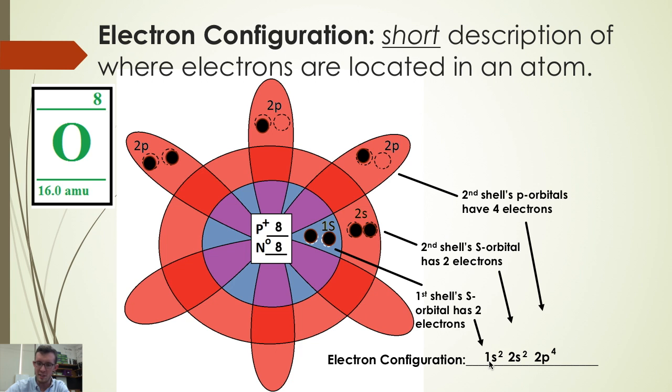So just this string of letters and numbers, that's the electron configuration. This represents the location of all these electrons shown here.